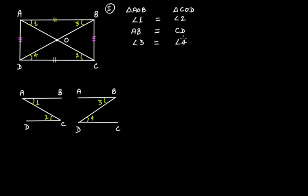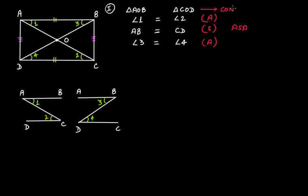Now we have two pairs of equal angles and one equal side between them: angle 1 equals angle 2, then the attached side AB equals CD, and then the attached angle 3 equals angle 4. So from the ASA criterion we can say that triangle AOB is congruent to triangle COD.